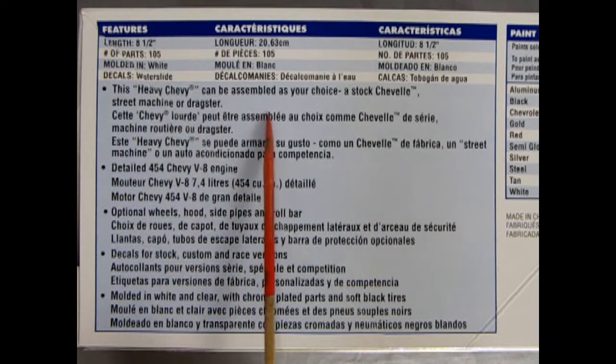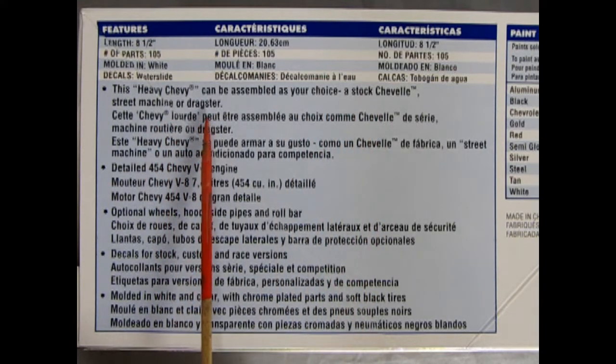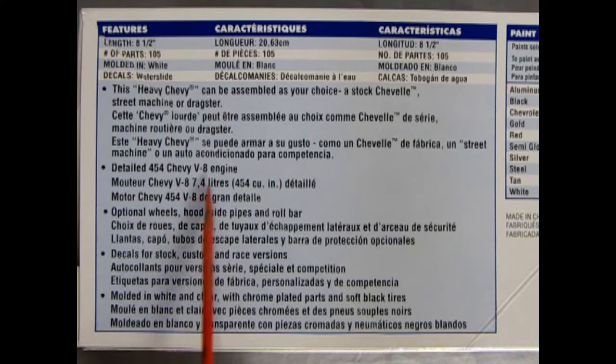You also get chrome of course. This heavy Chevy can be assembled as your choice: a stock Chevelle, street machine or dragster. Detailed 454 Chevy V8 engine. Optional wheels, hoods, side pipes and roll bar.